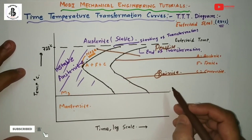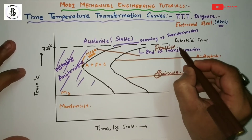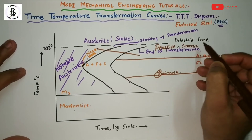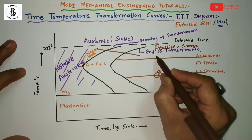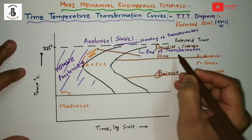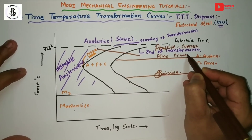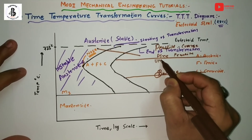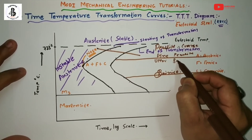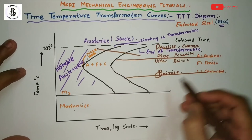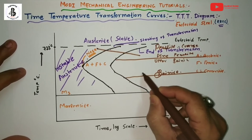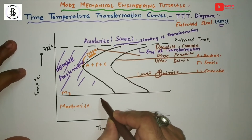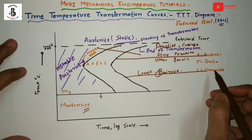For more detail: up to a certain temperature line it will be coarse pearlite, and in the upper levels that will be fine pearlite. In the upper region there will be upper bainite, and this is the region for lower bainite structure. Below this line it will be the formation of martensite.